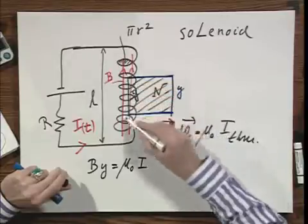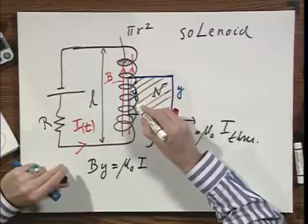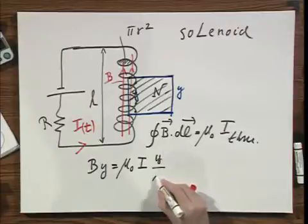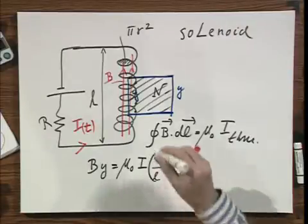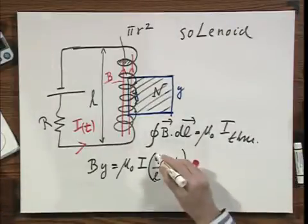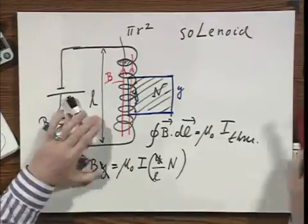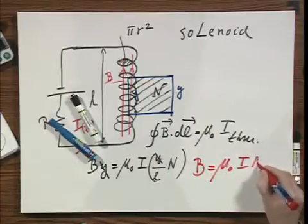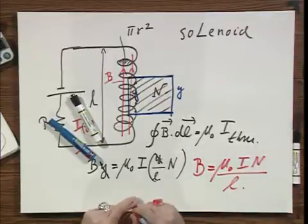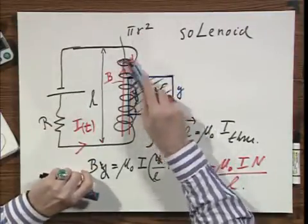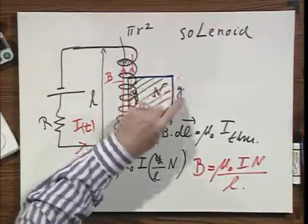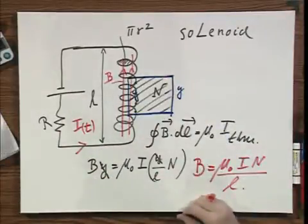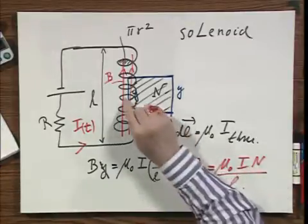The B field is only defined inside the solenoid, and B dot DL right here is zero — there is no B field outside. So when I make this closed loop integral going around clockwise in the direction of B, I find that B times Y equals mu zero times I. But this is a flat soap film, and the current penetrates several times through this soap film — Y divided by L times N. I lose my Y, and I find that the magnetic field in a solenoid equals mu zero times I times N divided by L. Notice it's independent of the cross-sectional area and also independent of Y.